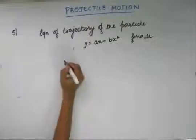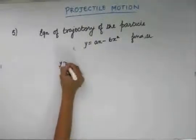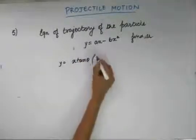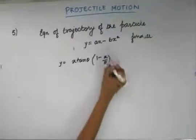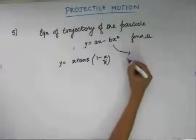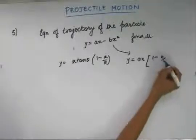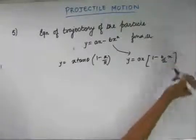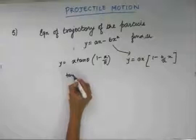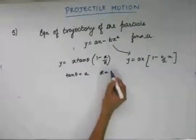I know that the equation of trajectory of the particle in projectile motion is given by y equals to x tan theta. This equation I can write as y equals to ax. Now, comparing these two equations, we get tan theta equals to a and the range of the particle equals to a by b.